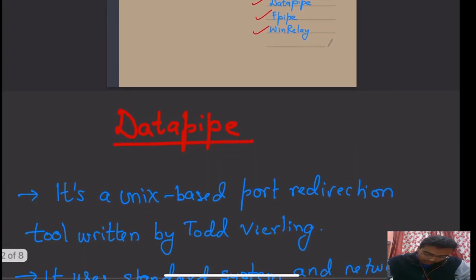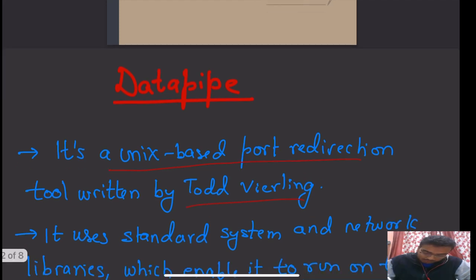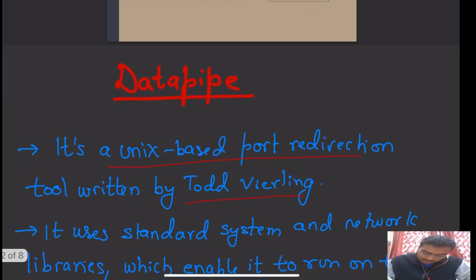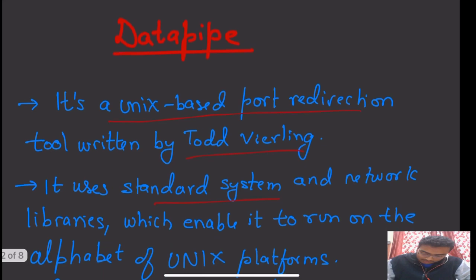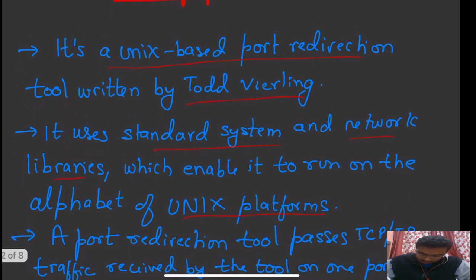Data pipe is a Unix-based port redirection tool written by Todd Vierling. It uses standard system and network libraries which enable it to run on the alphabet of Unix platforms.